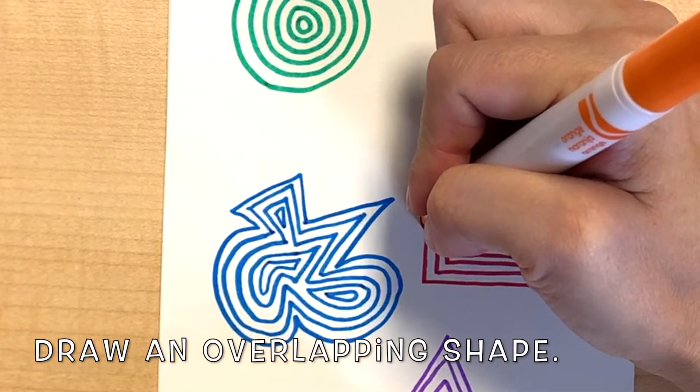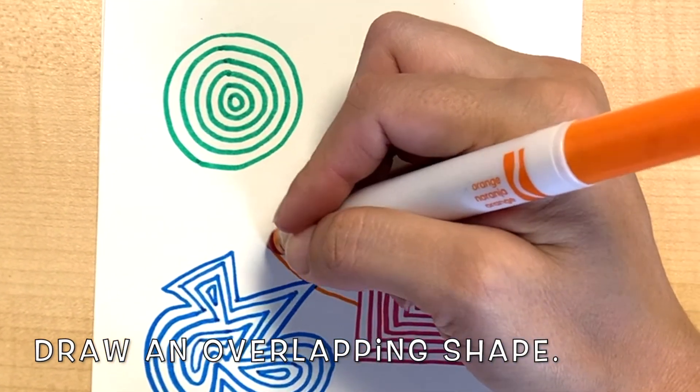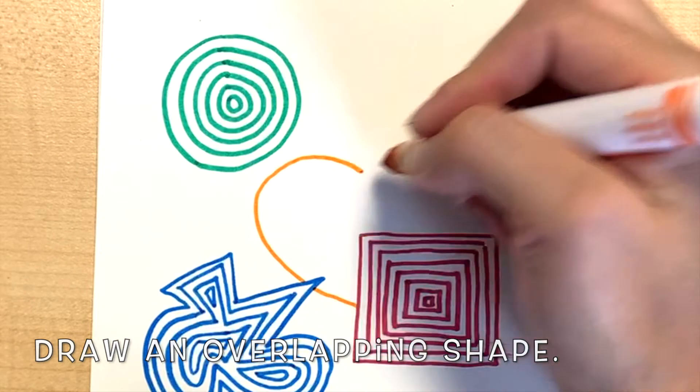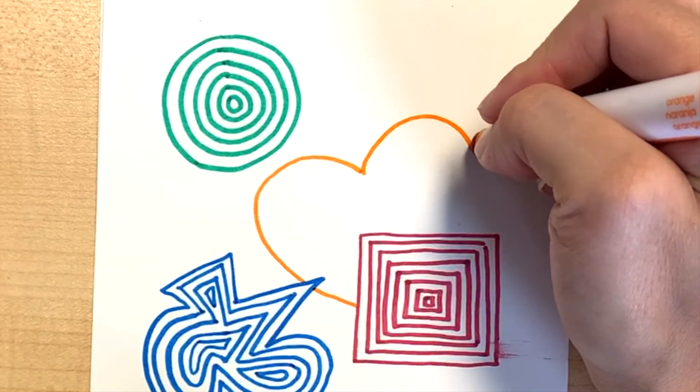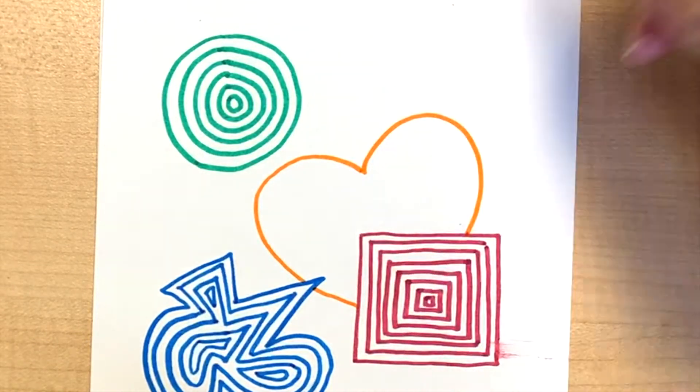Now try a shape that overlaps with your other shapes. Remember, when your line bumps into another shape you need to stop drawing.